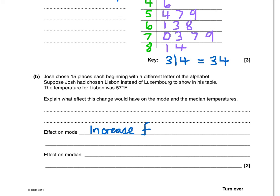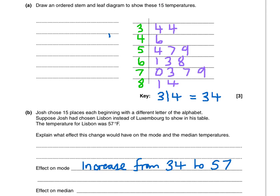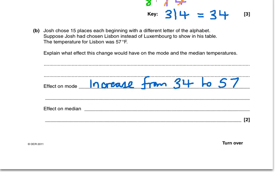The mode increases from 34 to 57. Now for the effect on the median — to find the median from a stem and leaf diagram, we cross off the biggest then the smallest, biggest and smallest, until we end up with just one or two numbers left in the middle. The median as it stands is 63. If I remove this 34 and replace it with another 57, the median is not going to change at all — the number in the middle is still 63. So there will be no effect on the median.